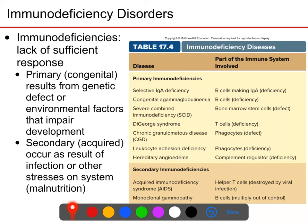For secondary immunodeficiencies, probably the most well-known example is AIDS — acquired immunodeficiency syndrome. This is a virus that infects and destroys helper T cells, so it affects any system that requires helper T cells: T-dependent B cell activation as well as T-dependent cytotoxic T cell activation.